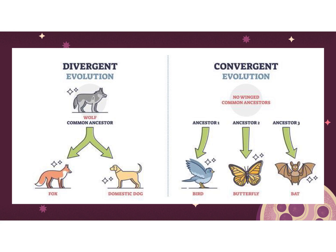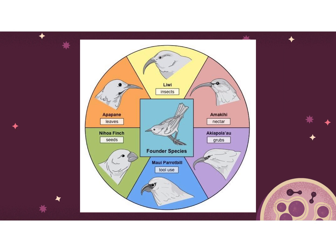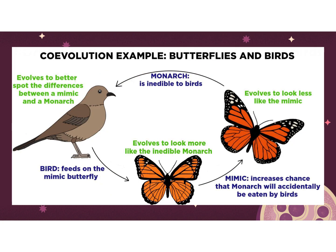In picture form: divergent versus convergent — the wolf had a common ancestor that separated into a fox and a dog, so divergent means they're separating. Convergent has no common ancestor, but organisms all develop wings on their own to fix a similar problem. Adaptive radiation shows the finch — depending on where it's living and what it's eating, it evolves differently, giving rise to a whole bunch of new species. Co-evolution is shown with monarch butterflies and birds — monarchs evolve to avoid being eaten, and birds find new ways to eat them.